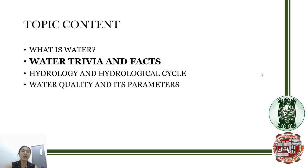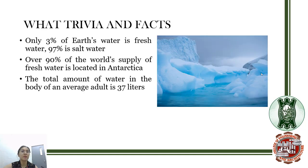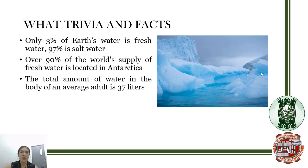Some trivia and facts about water: only 3% of Earth's water is fresh, and 97% is salt water. Although the Earth has a large amount of water bodies, only 3% is accessible to us because that is the only fresh water. The other 97% is salt water, which we cannot often use unless it goes through the desalination process, which is very costly and not very efficient.